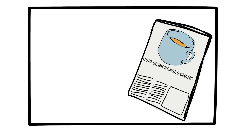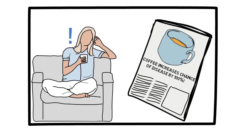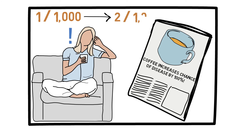It also goes the other way around. Let's say you read the newspaper and it says that people who drink coffee experience a 100% increase of a different disease — disease B. So, you increase your chance of getting this disease by 100% simply by drinking coffee. You might get scared if you are a coffee drinker. But think about this rationally: if disease B affects only 1 out of every 1,000 people, that chance only increases to 2 out of 1,000 if you drink coffee — again, a very small absolute difference of only 1 out of 1,000.